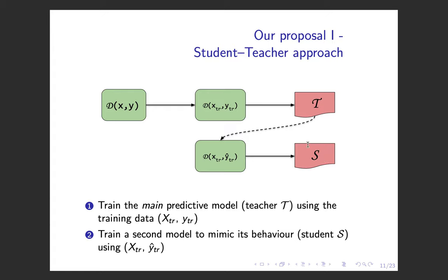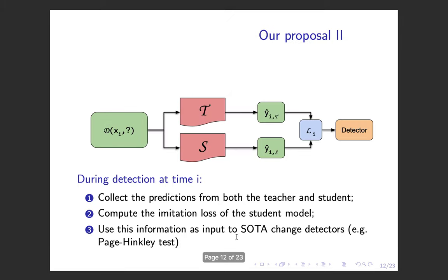This is a common approach in model compression tasks in which we have a large teacher model, like a large ensemble, and we want to compact it into a small predictive model. In this case, we are not concerned with scalability scenarios. We have just an algorithm, such as a random forest, and we build a second random forest with the predictions from the first in order to mimic it.